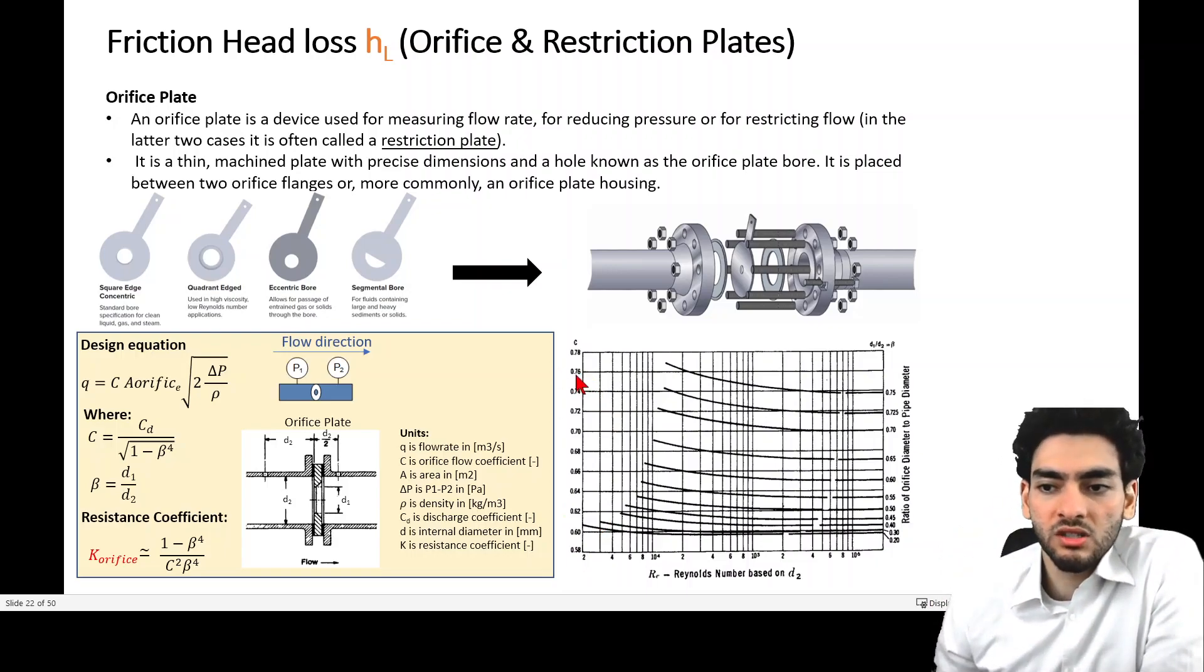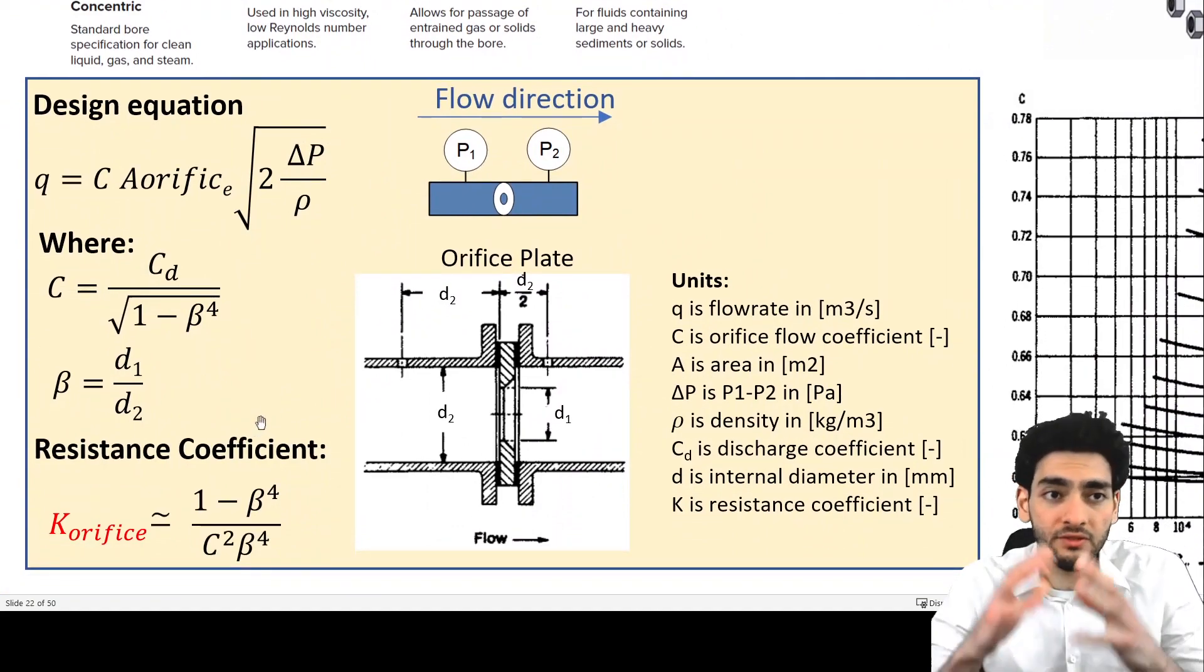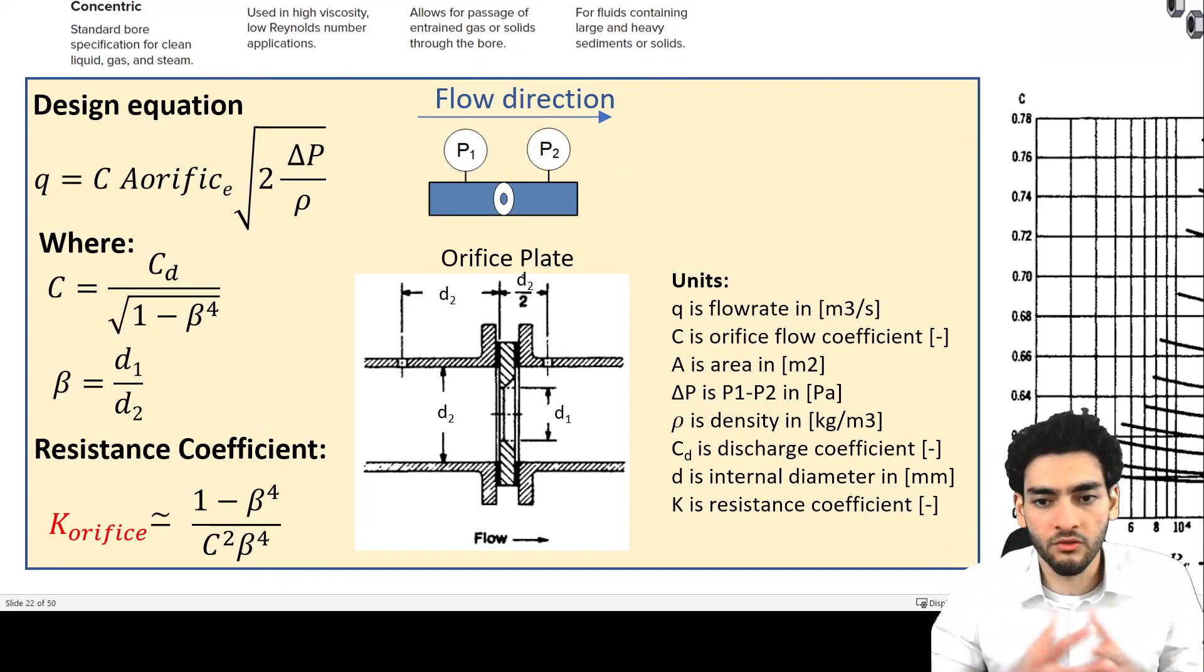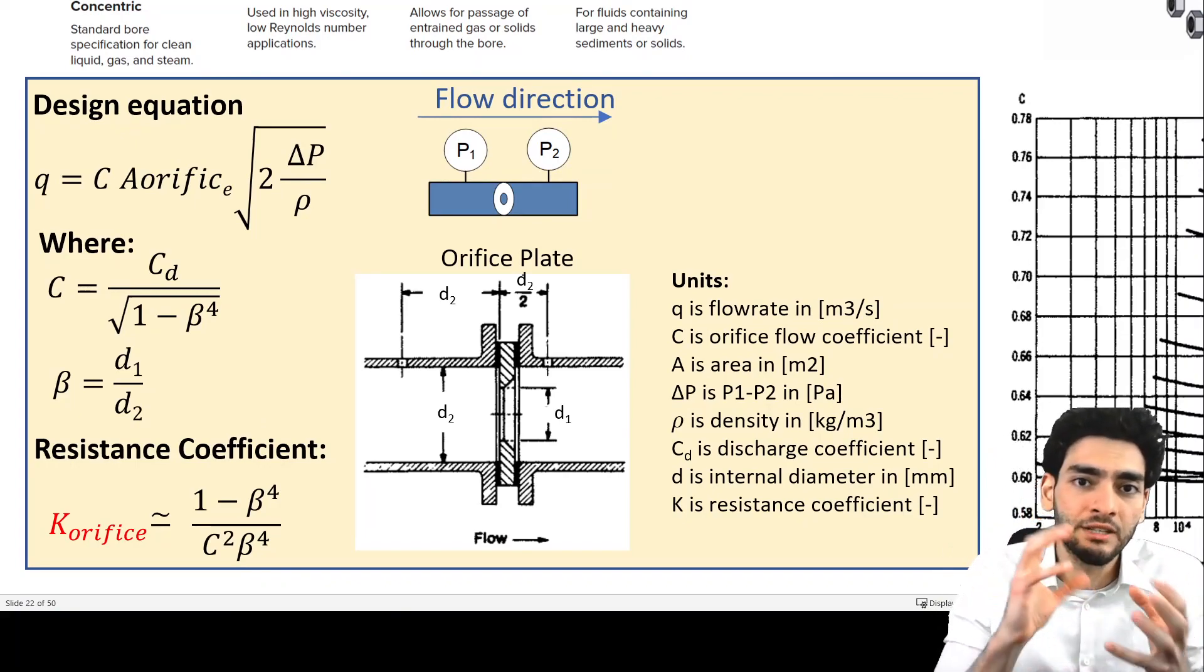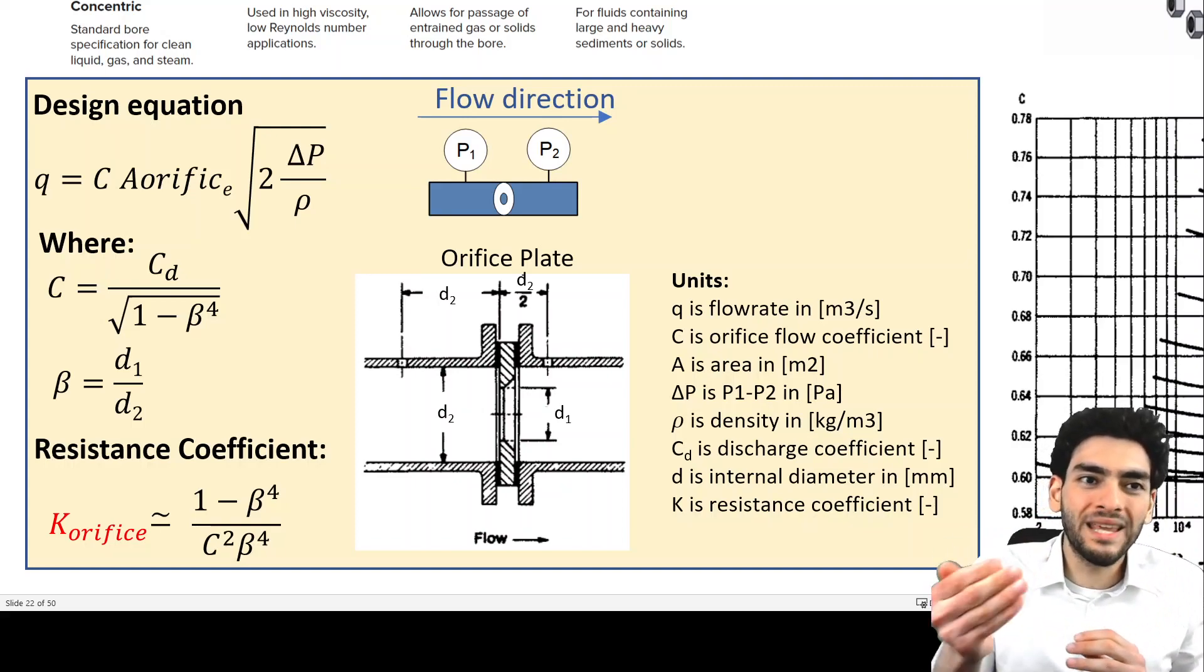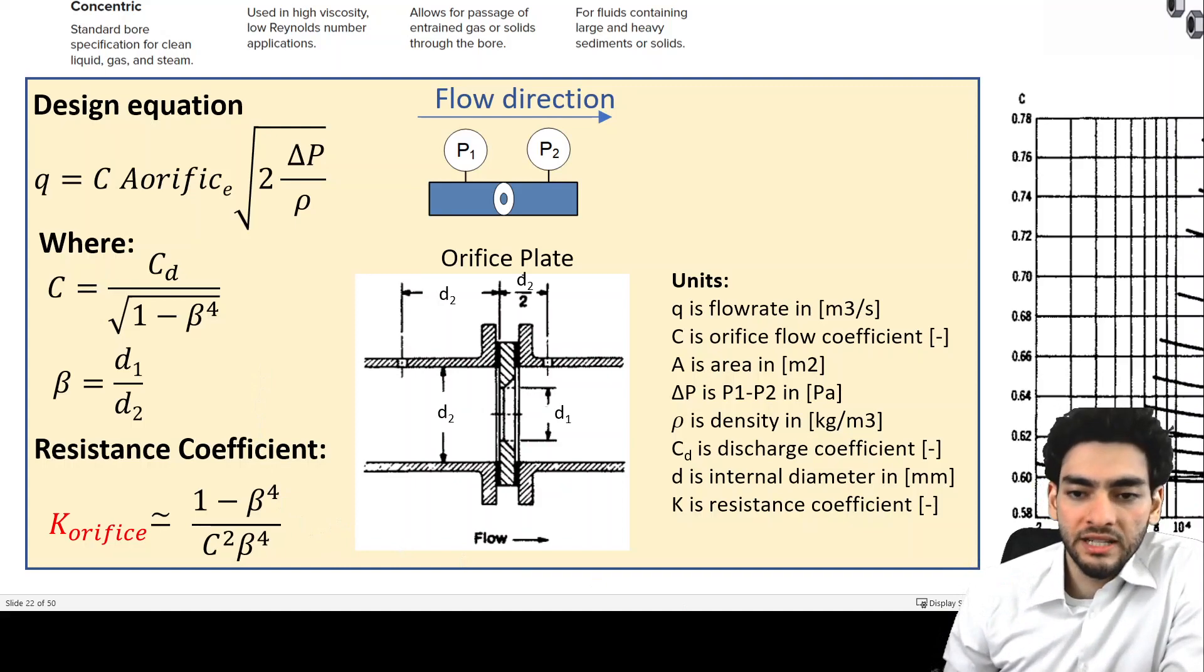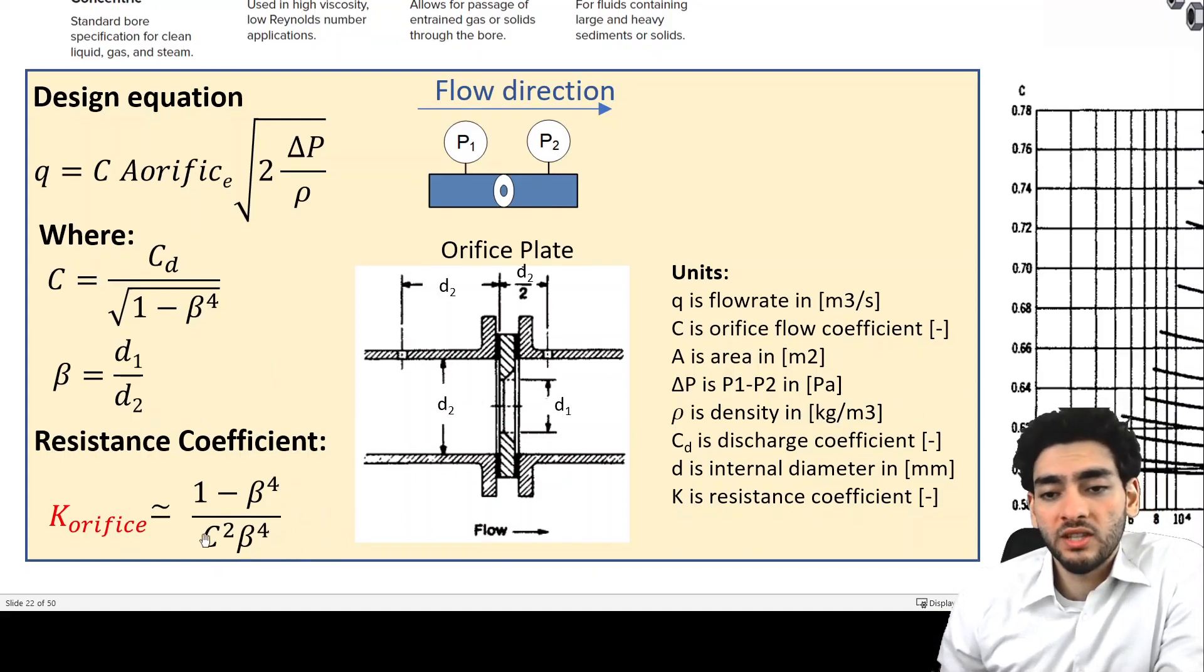You might now think to yourself, similarly to the flow coefficient used for valves, how do you convert that to a resistance coefficient? Because if we want to quantify the frictional head loss using the Darcy equation, we need to find what this means in terms of a resistance coefficient. Based on Crane's handbook, they provide an approximation: the resistance coefficient K of the orifice is approximately equal to...